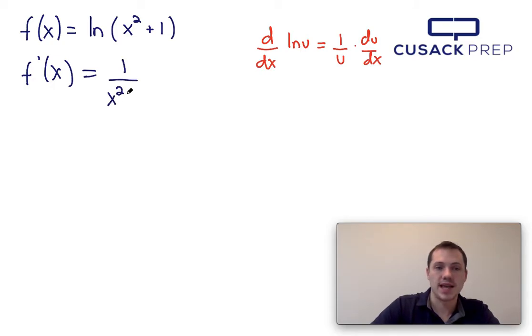where u is everything that's inside of the function, so that's that x squared plus 1, and then we have to multiply it by du dx, which is the derivative of what's inside here.